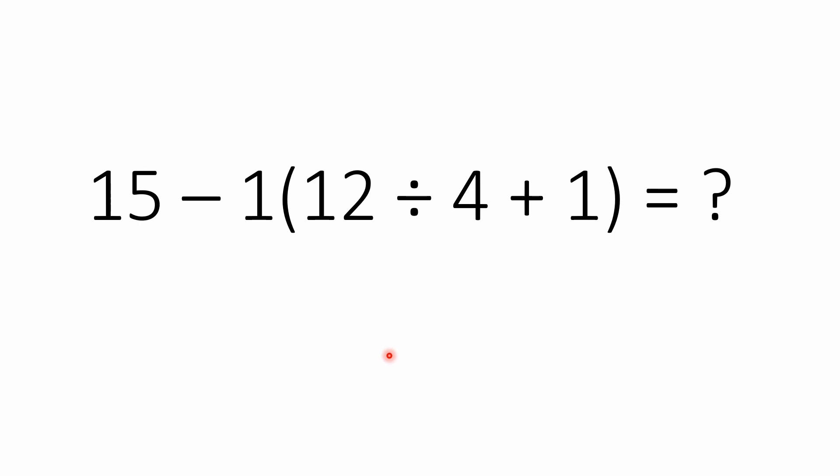Welcome everyone back to the Math Puzzle Crash Course. I have a problem that I've seen show up in some Facebook posts — a lot of people are getting this one right, but a lot of people are forgetting about the order of operations. The problem is 15 minus 1 multiplied by the quantity 12 divided by 4 plus 1, which is in parentheses. We want to find out what this equals.